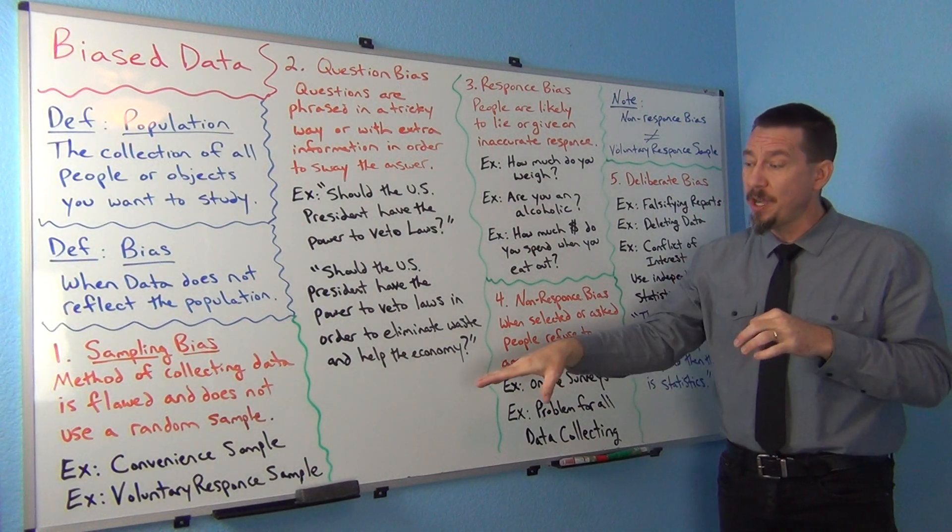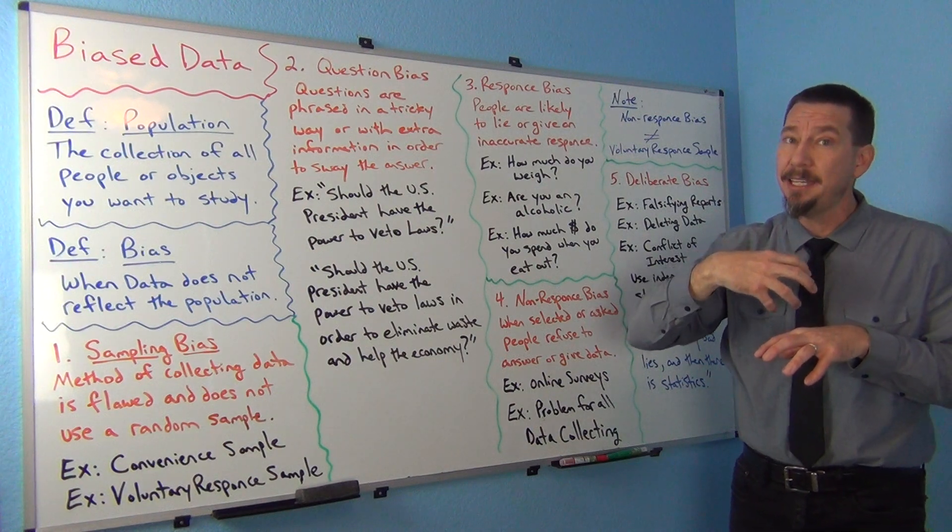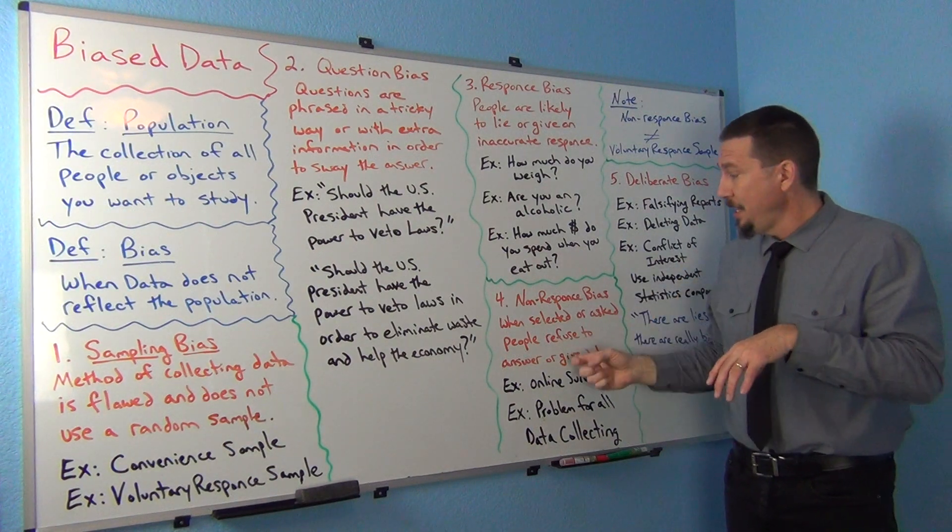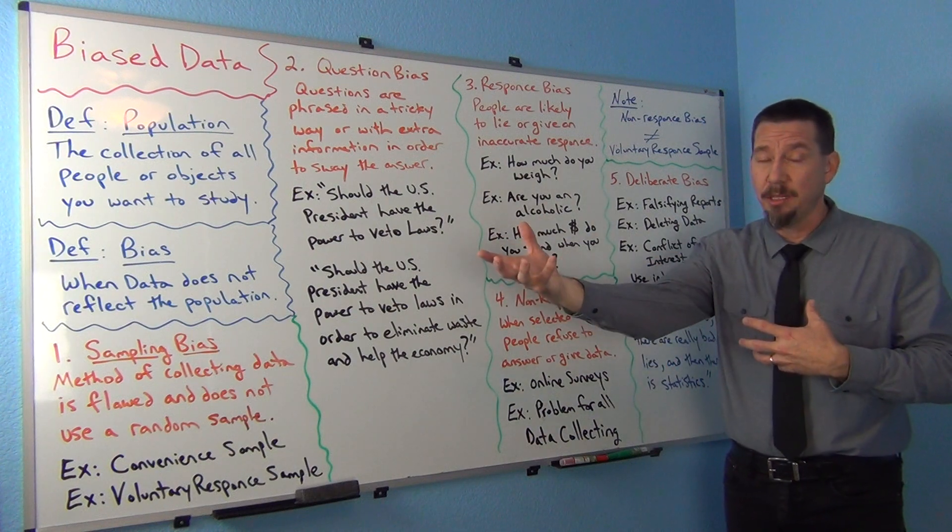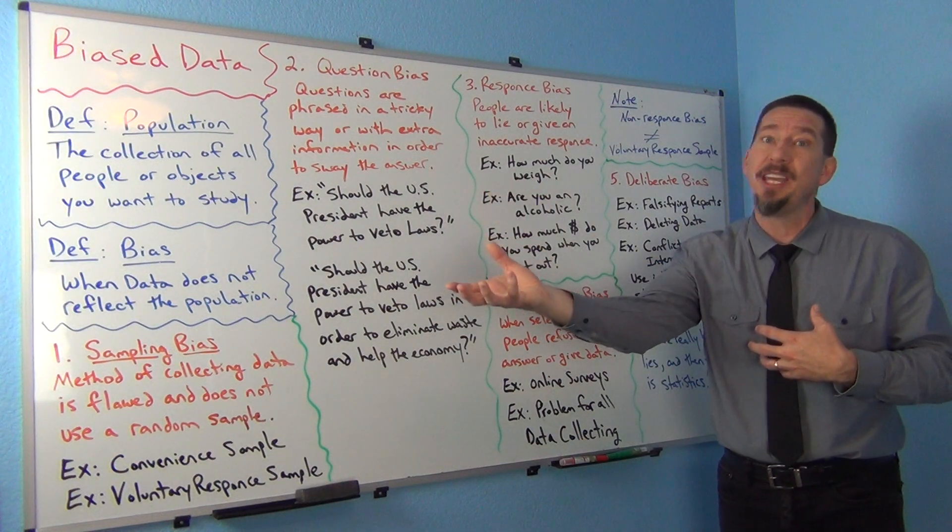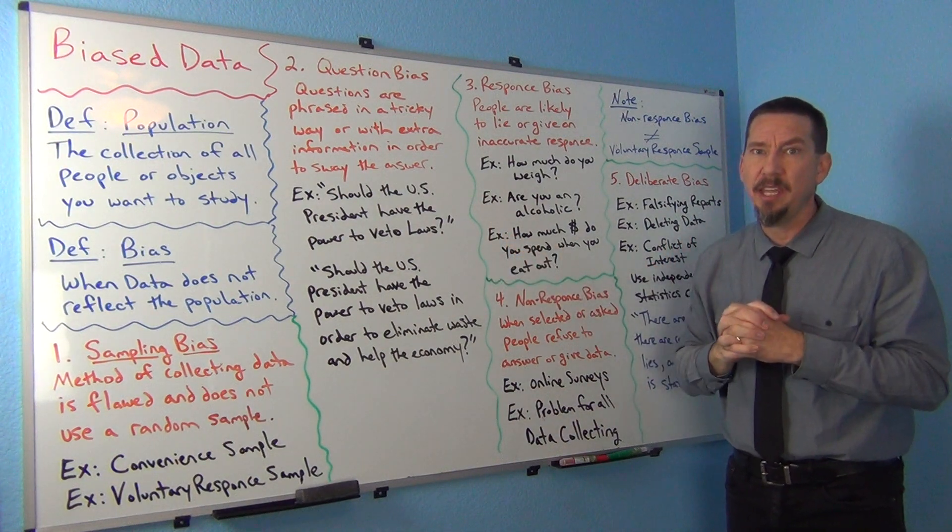So voluntary response sample, they're self selecting themselves to be in your data set. You're allowing that, which is not a good idea. Non-response bias is you selected them or the computer randomly selected the person, but then once you selected them, they don't want to talk to you. That's a good way to kind of think about it. They are different.